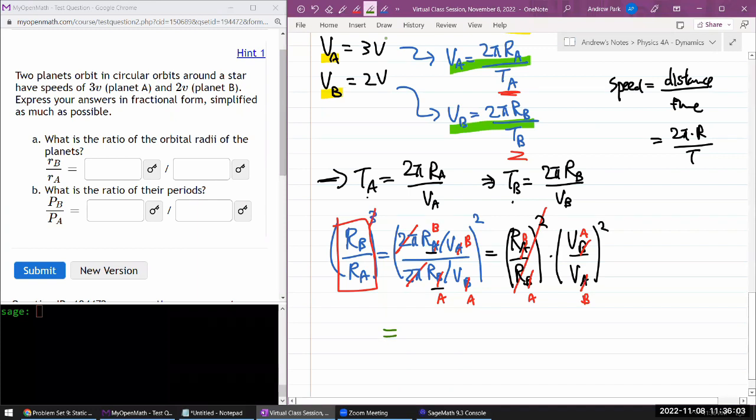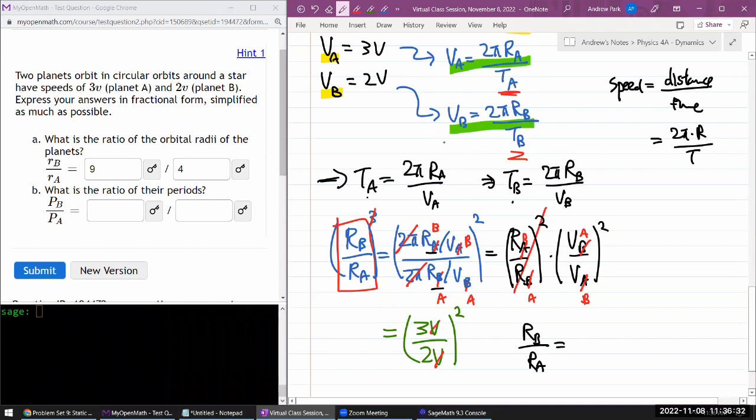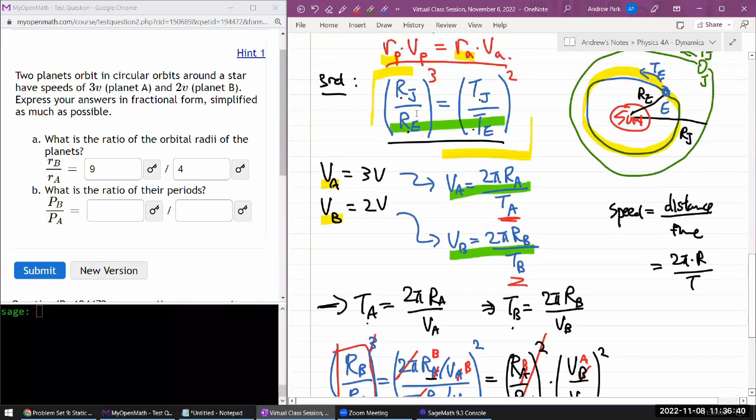So, finishing the right-hand side, we have V_A, which is going to be 3V over V_B, which is 2V raised to power of 2. So, V is cancelled out. So, we have 3 squared over 2 squared, or, I guess, 9 over 4. So, once we have that, that R_B over R_A is equal to 9 over 4, we can use that information directly in Kepler's third law to rewrite this with B, A and B, A. Directly use that 9 over 4 ratio here to solve for the ratio of the period.